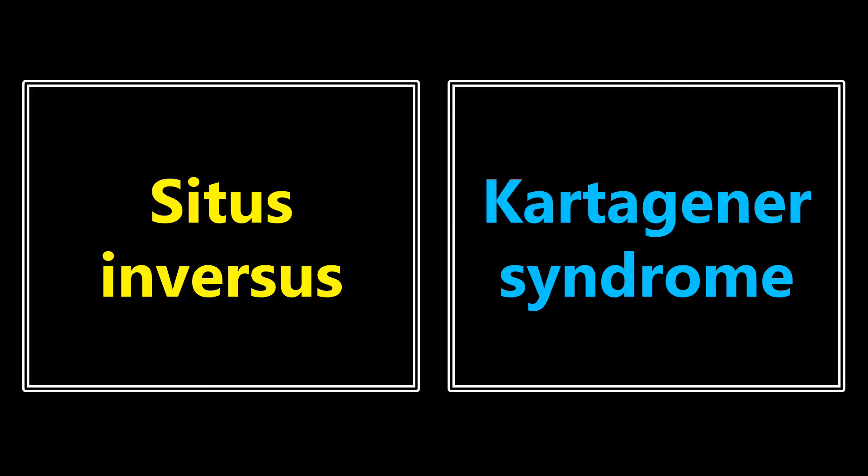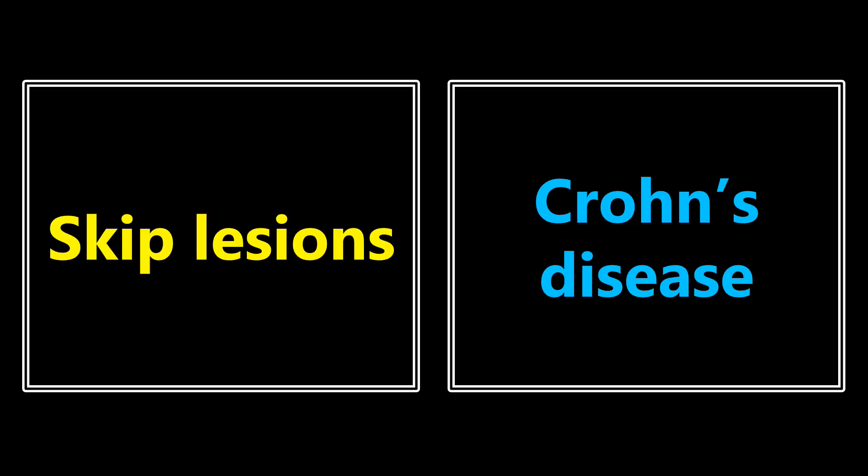Situs inversus: this is where the organs in the chest and abdomen are reversed — kind of flipped on an axis. Usually the only time you're going to see that is with Kartagener syndrome. Skip lesions: this term comes up a lot and it's usually in reference to Crohn's disease. Remember, Crohn's disease is not continuous — it has these skip lesions — whereas ulcerative colitis is continuous.